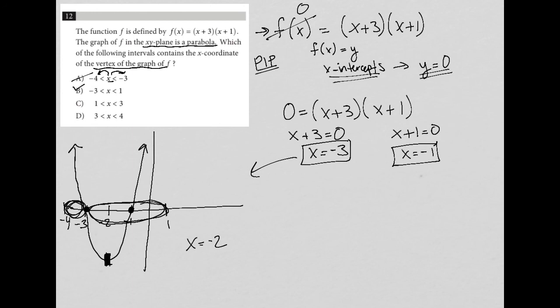Choice C says that my x value is between positive 1 and positive 3. That takes us over here. That's definitely not true. And choice D takes us even further away, saying that x is between 3 and 4. That's also not true. So the best answer to this question is choice B.